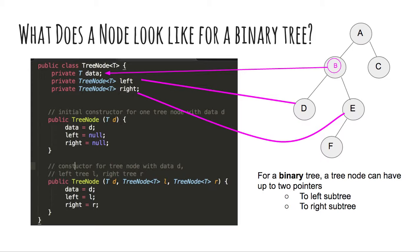In this example, we are going to represent the node that stores B. B represents data. Left points to the node storing D. Right points to the node storing E.